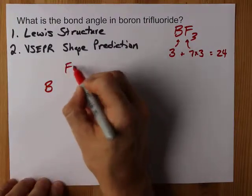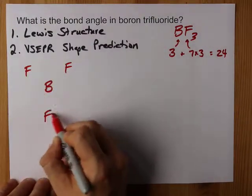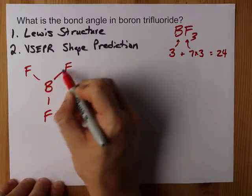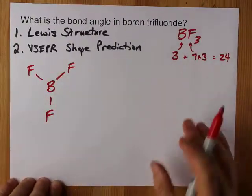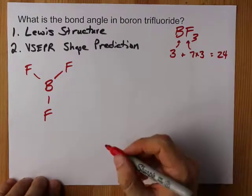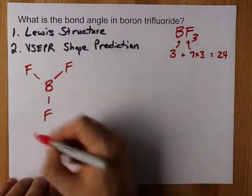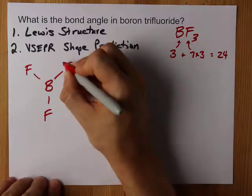I'm going to put B in the center, surround it with fluorine atoms, connect it with single bonds. That gives me six of the electrons total, but I need 24. So I'm going to fill the outer atoms so they have a complete octet.